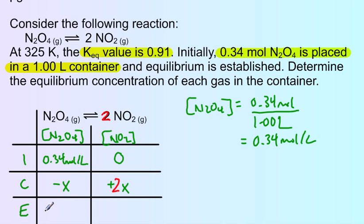We want to remember if there's a coefficient in the balanced equation, we include that in our change line. When N2O4 goes down by some amount, the concentration of NO2 will go up by double that amount. At equilibrium we expect to have 0.34 moles per liter minus x for N2O4, and for NO2 we have 2x.